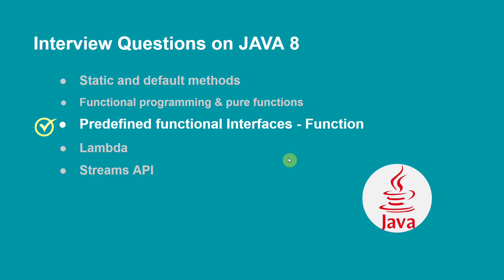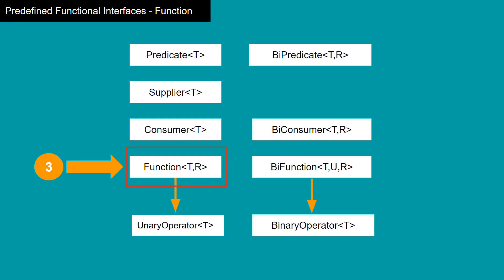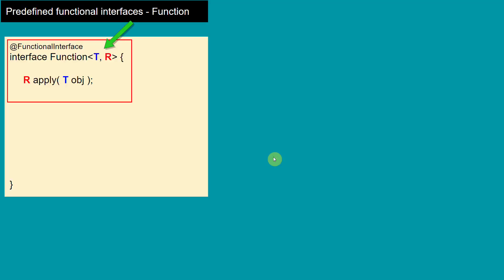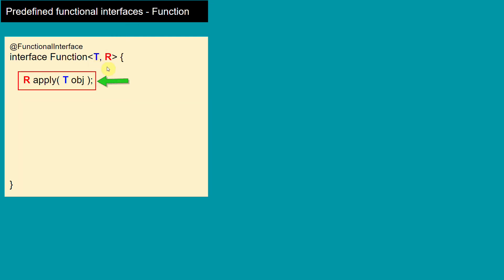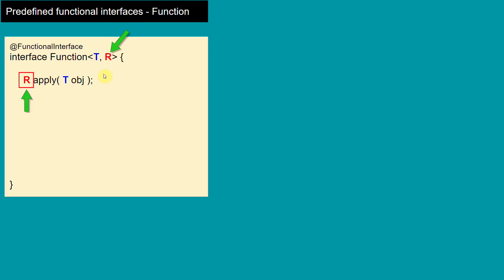We are covering predefined functional interfaces and in this video we are going to cover our third predefined functional interface, which is Function. If you look at the definition of the Function interface, you see there are two generic type parameters: T and R. It has only one abstract method, where T is the input parameter and R is the return type of that abstract method.